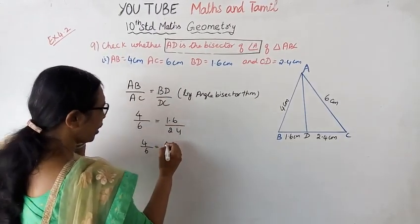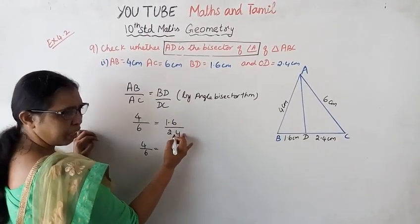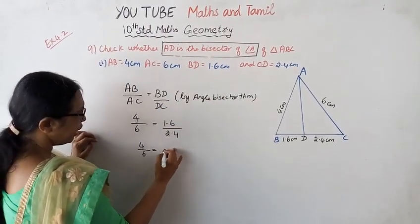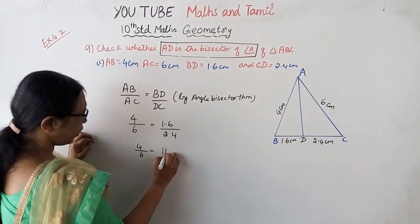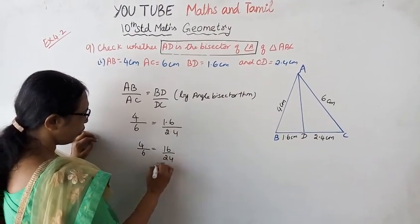To handle the decimals, multiply both sides by 10. So 1.6 becomes 16 and 2.4 becomes 24, giving us 4 by 6 equals 16 by 24.